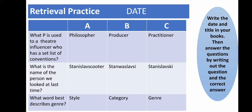Number one, what piece is used to describe a theatre influencer who has a set list of conventions? Is it A, philosopher, B, producer, or C, practitioner?